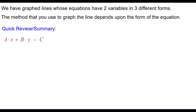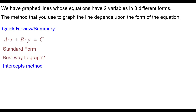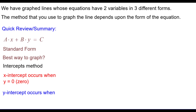A times x plus b times y equals c is considered standard form. The best way to graph this one is using the intercepts method. Recall that the x-intercept occurs when the y-coordinate is 0, and the y-intercept occurs when the x-coordinate is 0.